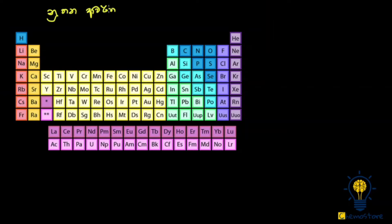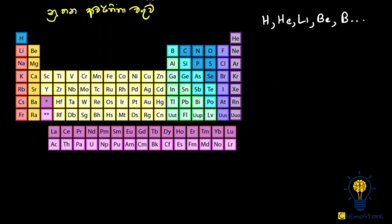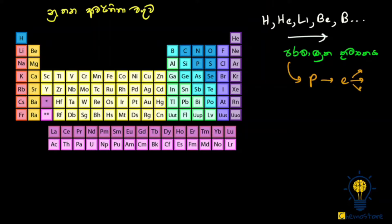The first element is from hydrogen, helium, lithium, and boron. It means that we can see the boron of the particles — it means proton or electron.